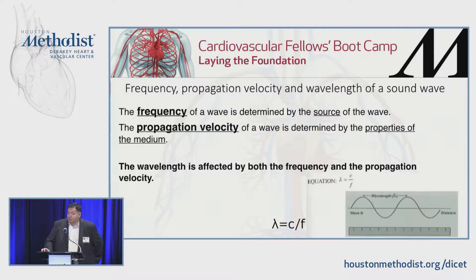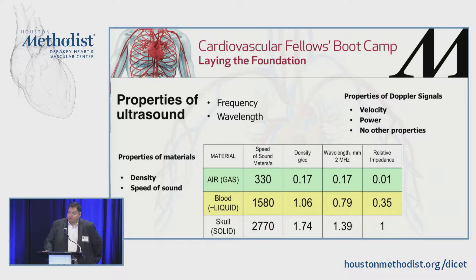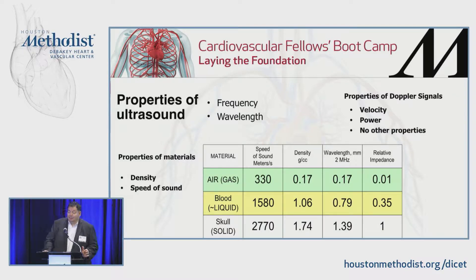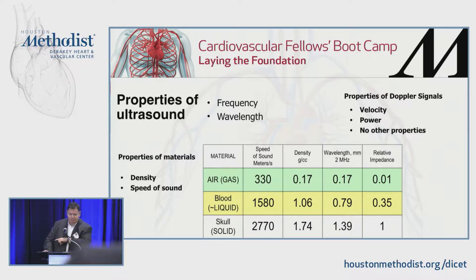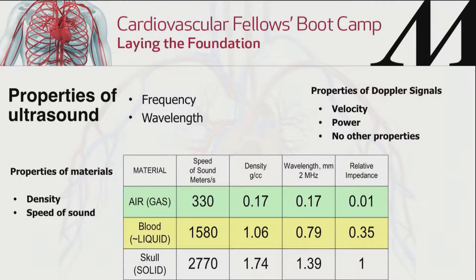So that's the one equation. You just need to remember how lambda comes out from the speed and the frequency: C divided by F. It's also very important that not just the ultrasound, but the medium density and the speed play a huge role. For some reason, the RPVI exam wants you to know the soft tissue speed of ultrasound. Blood is 1580 m/s. Soft tissue is 1540 m/s. You have to remember that.